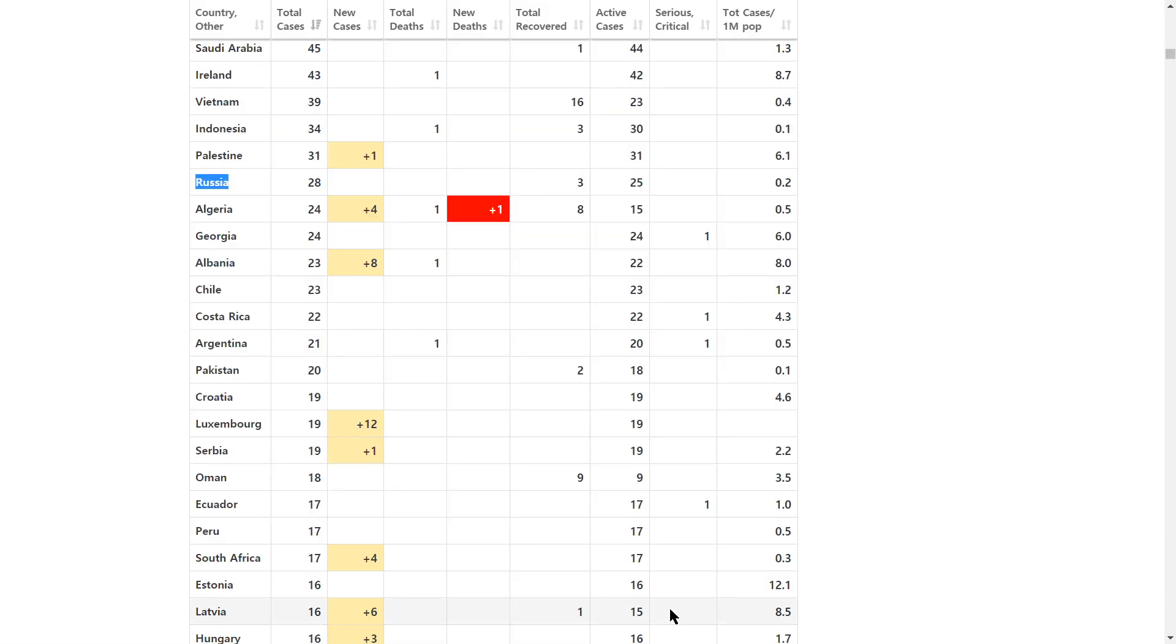I have chosen Russia as the country to model. Currently there are 28 total cases, 3 total recovered, 25 active cases and no deaths. Though these 25 cases are likely to be quarantined or in the hospital, we will use these numbers as our initial values.